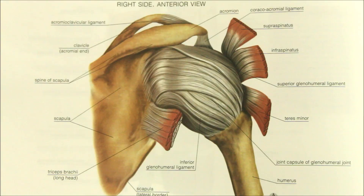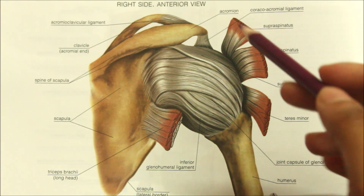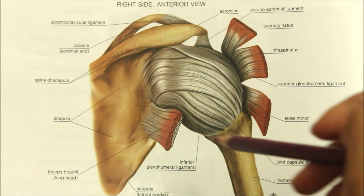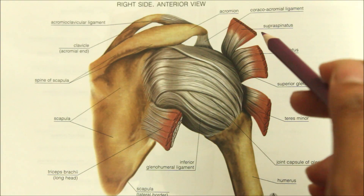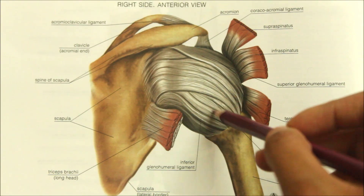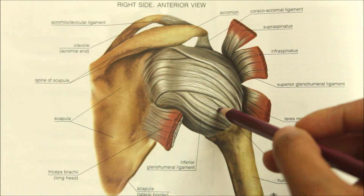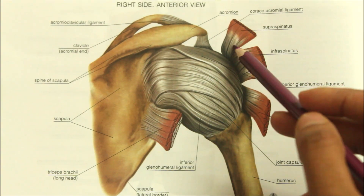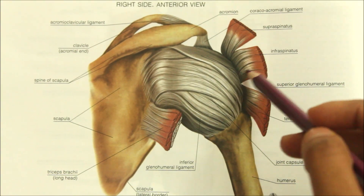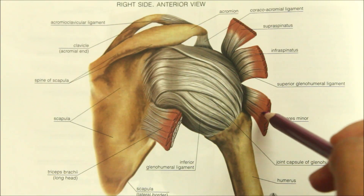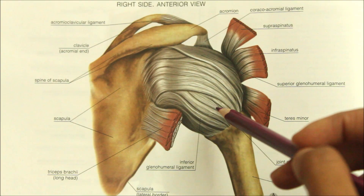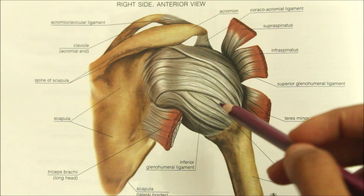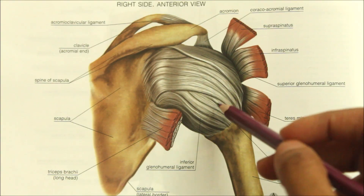The second structure is the musculotendinous cuff, which is a supporting and strengthening structure of the shoulder joint made up of part of its capsule blended with the tendons of the subscapularis, the supraspinatus, the infraspinatus, and the teres minor muscles as they pass to the capsule or across it to insert onto the humerus.